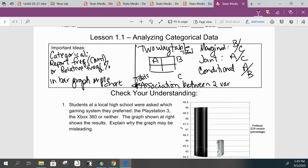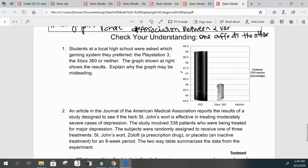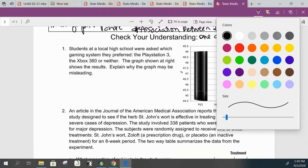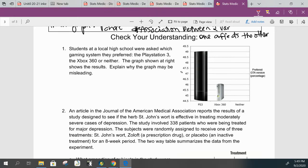So let's look at an example here. This is your Check for Understanding, and normally what we'll do with these is let you work on them independently first and then I'll post the solutions. But this is the first week, so I want to kind of model for you what we're looking at. Students at a local high school were asked which gaming system they preferred: the PlayStation 3, the Xbox 360, or neither. The graph at the right shows the results, and your job is to explain why the graph is misleading.